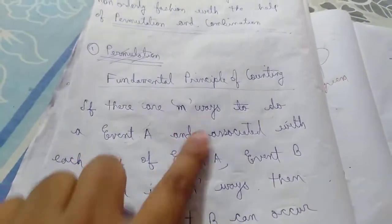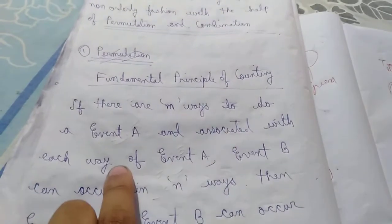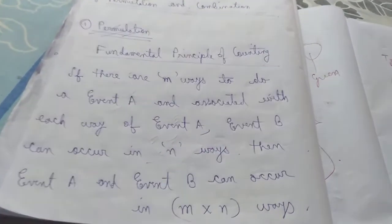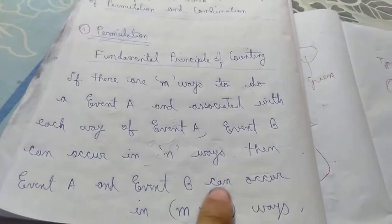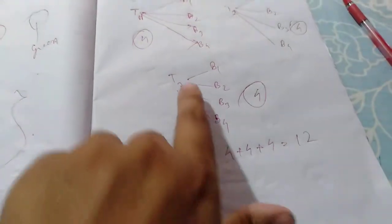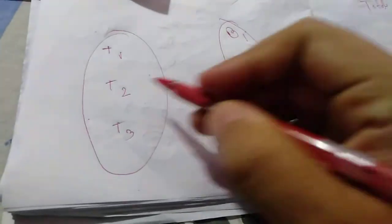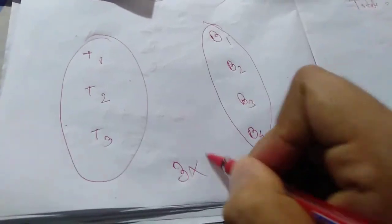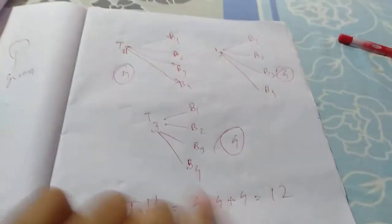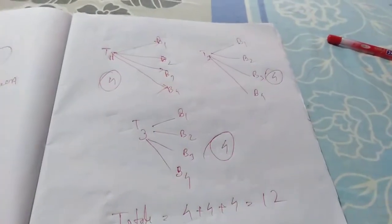This is the fundamental principle of counting. If there are m ways to do event A, then associated with each way of event A, event B can occur in n ways. Then event A and event B can occur in m into n ways. So directly: 4 into 3 ways — that is 12 ways. This is the fundamental way of counting.